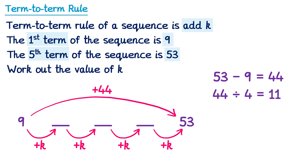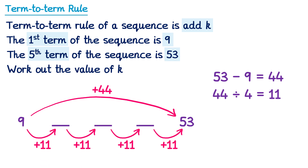This means if we were to do it in four smaller jumps, each one would be 11. So we can replace all of those k's with 11. You may want to double check this. If you do 9 add 11, you get 20. 20 add 11, you get 31. 31 add 11, you get 42. And 42 add 11 does give you 53. So each of those jumps was add 11, so k must have been 11.